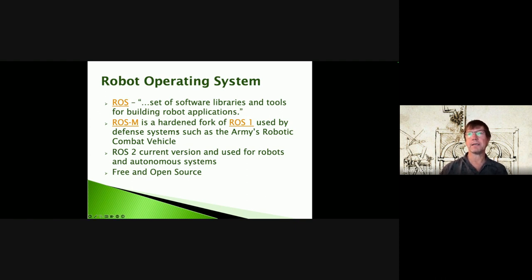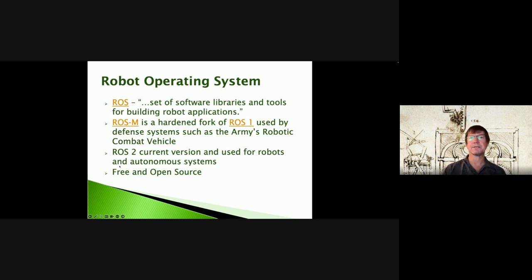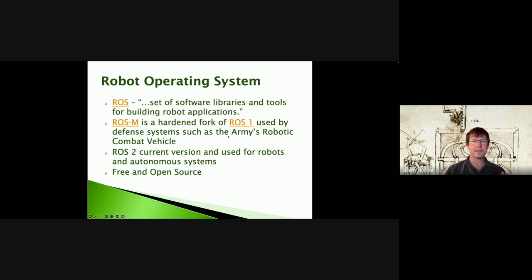ROS is a set of software libraries and tools for building robot applications. ROS-M is actually a hardened fork of ROS 2. When we talk about ROS these days, ROS 2 is the current version, preceded by ROS 1. There are different versions within both ROS 1 and ROS 2, but there was a big change in going to ROS 2.